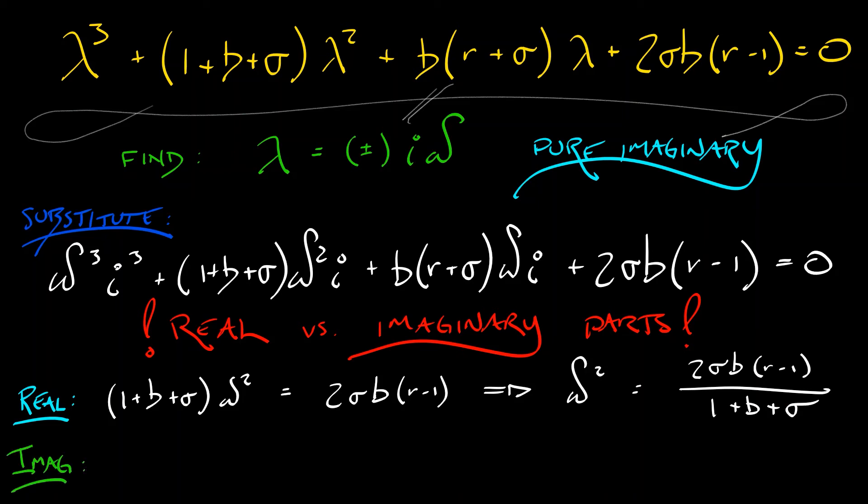So looking at the cubic term and the linear term and moving things around gives us omega cubed equals b times quantity r plus sigma times omega. We know that we don't want omega equal to zero, so we cancel out an omega from both sides and we get omega squared equals b times quantity r plus sigma. And this is it. This is what we've been looking for.